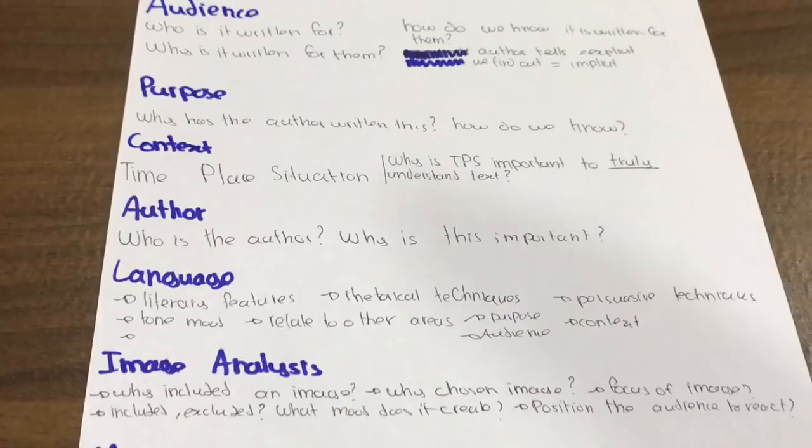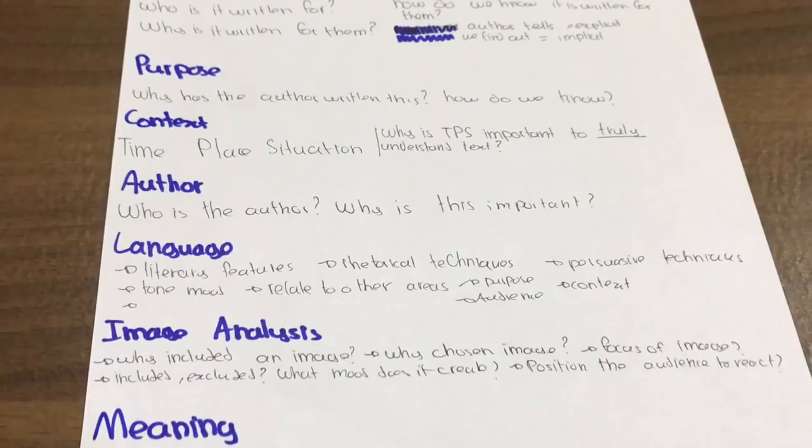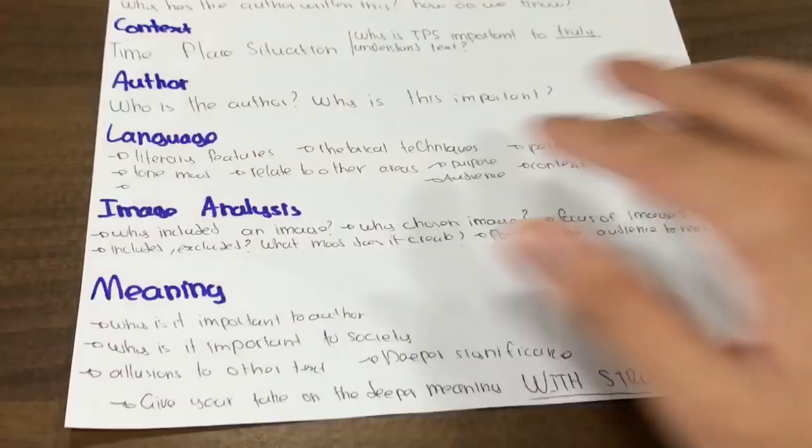The next thing is the image analysis. Why did the author include an image at all? And why has he chosen this specific image? What is the focus of the image? What is included in the image, but what is excluded from the image? What mood does the image create? How does it position the audience to react? Maybe about that insurance company, it pictures a woman who's happy with her family. That's going to create, it's going to position the reader to react very positively to the company who helped her. So that may be the purpose of the image. Again, I'm using very simple examples. You're going to need to think a lot more deeply than that in the exam. But you have to just understand the point I'm trying to make. What is the reason for the image? And if you have an image, remember to dedicate an entire paragraph to that image. It is very important.